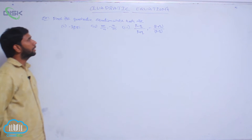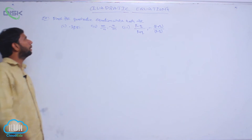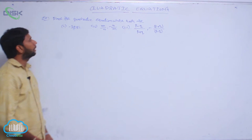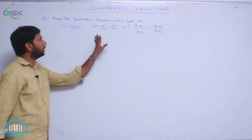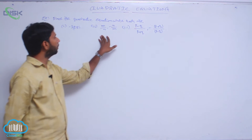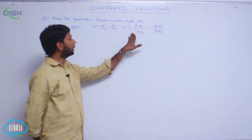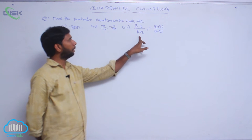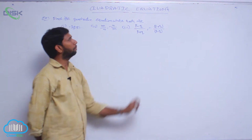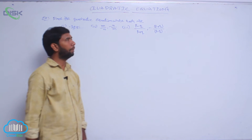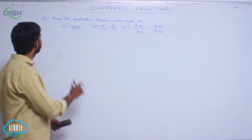Find the quadratic equation whose roots are: first, minus 3 plus 5i and minus 3 minus 5i; second, m/n and minus n/m; third, (p minus q)/(p plus q) and minus (p plus q)/(p minus q).